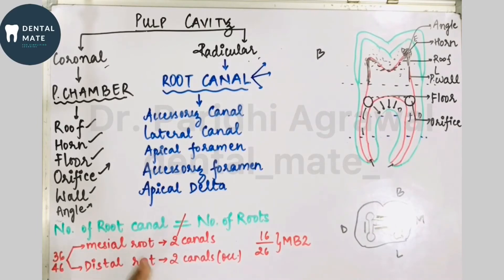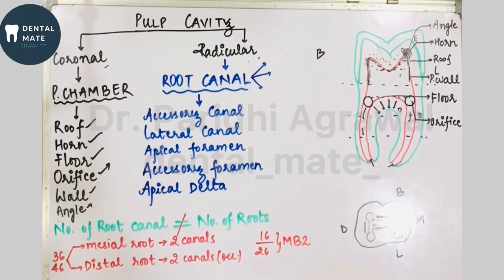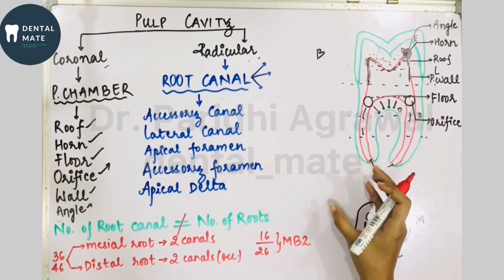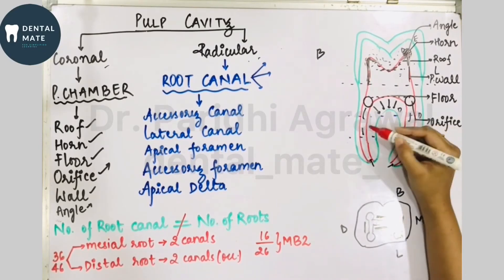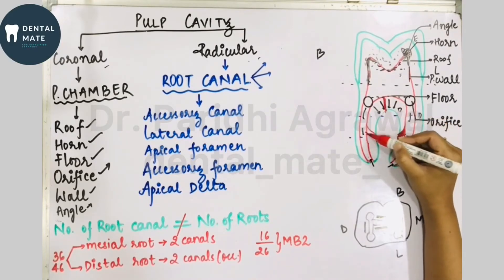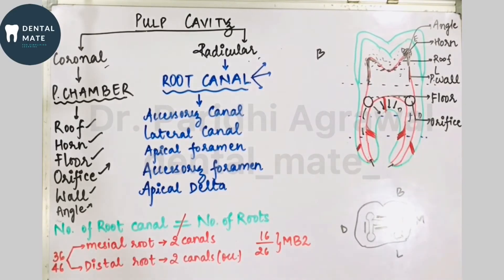Various terminologies include accessory canals, lateral canals, apical foramen, accessory foramen, and apical delta. Accessory canals are branchings from the main root canal — they can originate anywhere along the main canal. These branchings from the main root canal are known as accessory canals.